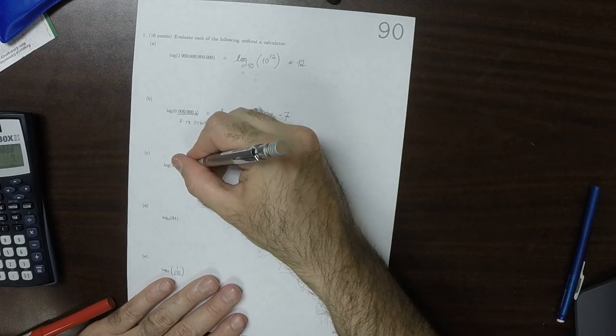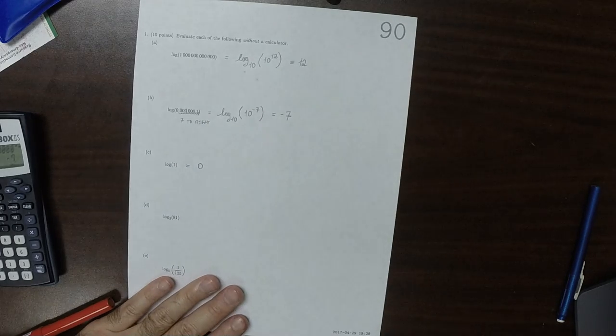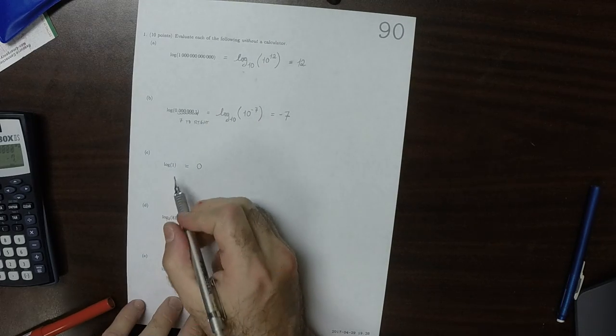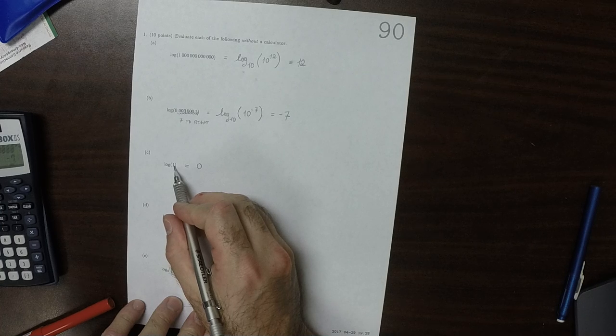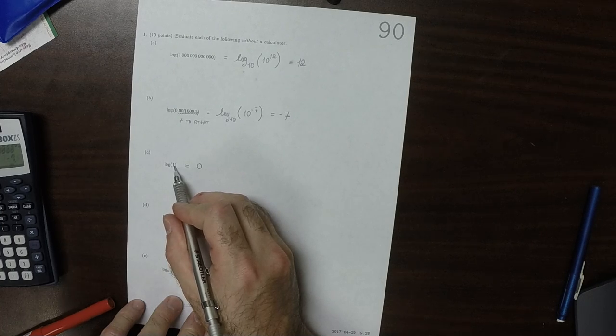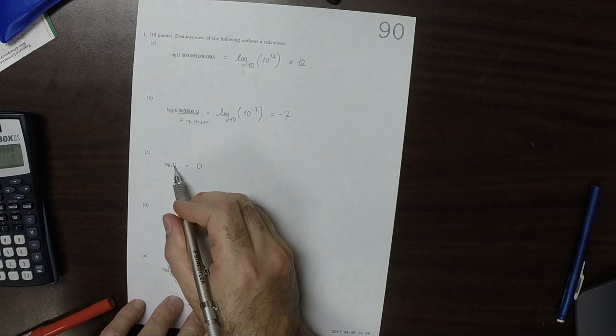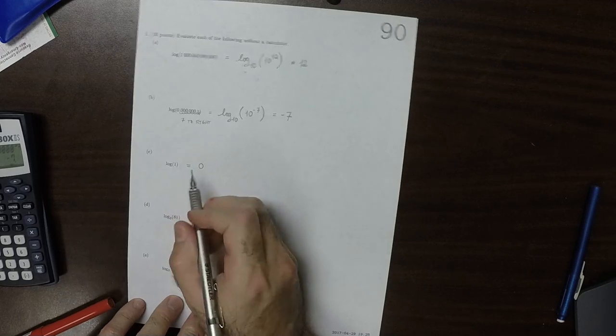The log of 1, that's just 0. That's something you should have memorized, which is to say, how many places would I have to move the point so that the point is right there? No places. So the answer is 0.